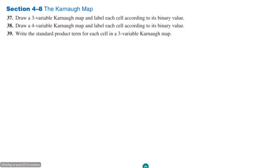Welcome back guys. This is section 4.8, which has three questions: 37, 38, and 39. In this series we will solve each question in our upcoming videos and in this video as well. Let me talk about question 37, which is related to Karnaugh maps. Karnaugh maps are basically maps for simplifying boolean expressions, and we will see how they are used to simplify boolean expressions.